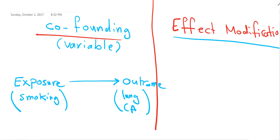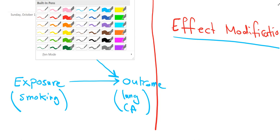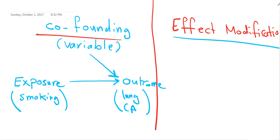The confounding factor — remember this, it's very important — is a factor that affects the outcome and affects the exposure. Remember this, it's very important. This is the basic, the foundation of the differences.